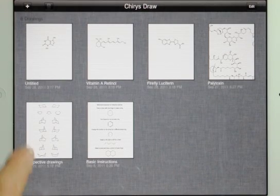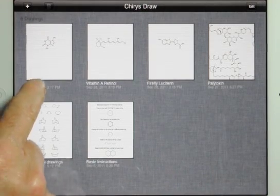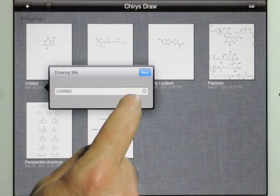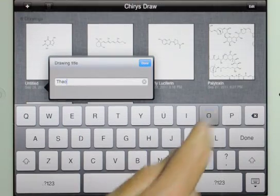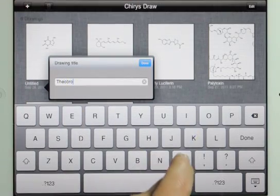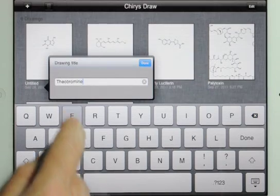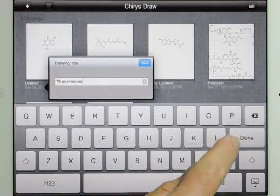To give the drawing a title, touch the text under the drawing thumbnail. Touch the X to clear any existing text. Type the new title, and then touch either Done button.